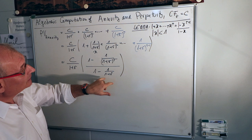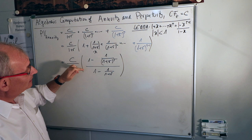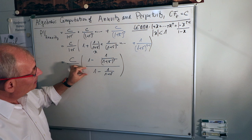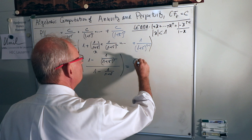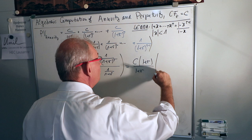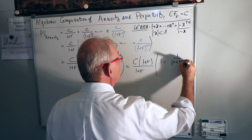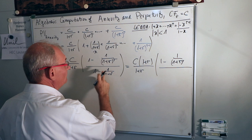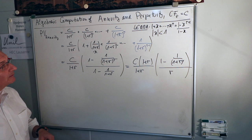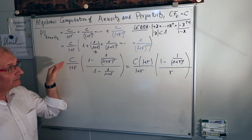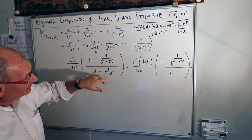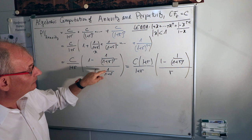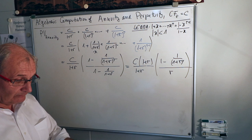Now multiply both the numerator and the denominator by (1+r). On the denominator, 1 minus 1/(1+r) multiplied by (1+r) gives (1+r) minus 1, which equals r. On the numerator, multiplying by (1+r) gives the factor (1+r) in front. So the formula becomes c times (1+r) divided by (1+r), times (1 minus 1/(1+r)^t) divided by r.